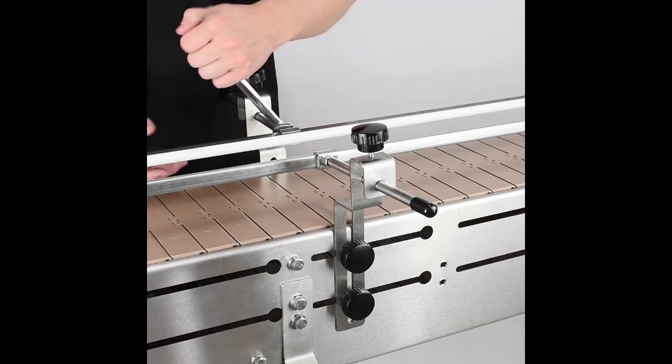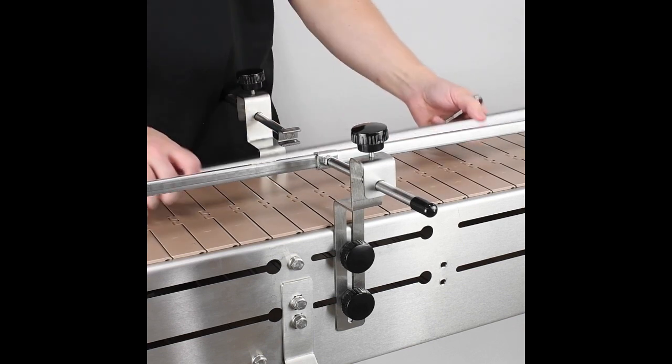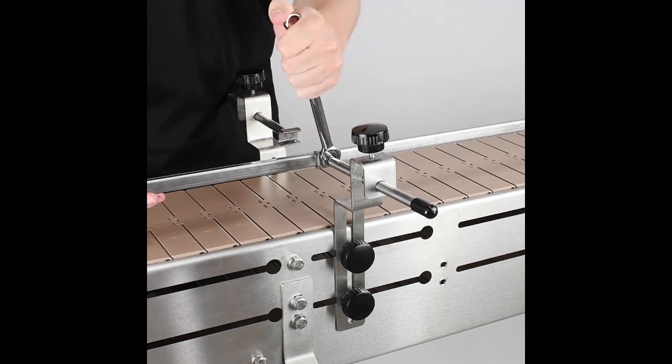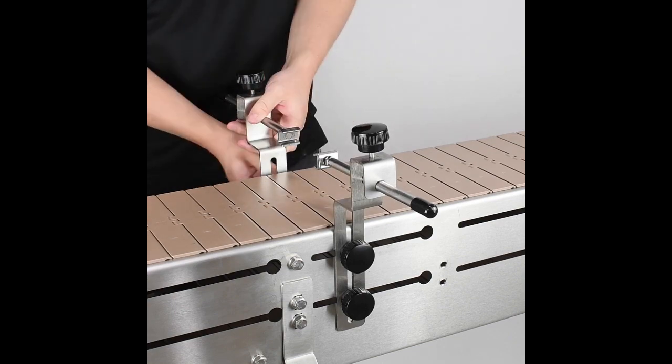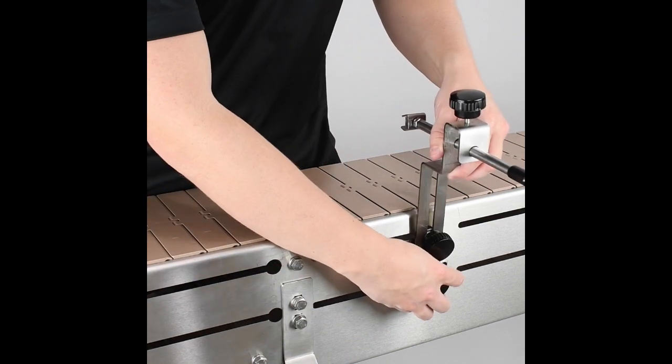To attach our adjustable gate system, we will need to temporarily remove the guide rails on the conveyor. Do so by loosening the jam nuts clamping the rails in place using a 1/2-inch wrench, sliding them out and setting them aside. Loosen the black knobs holding the guide rail mounting brackets in place and slide them out of the slots in the conveyor as well.